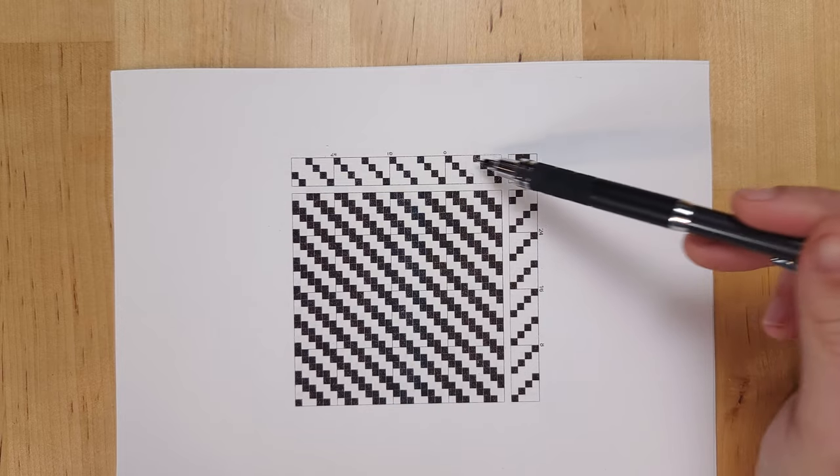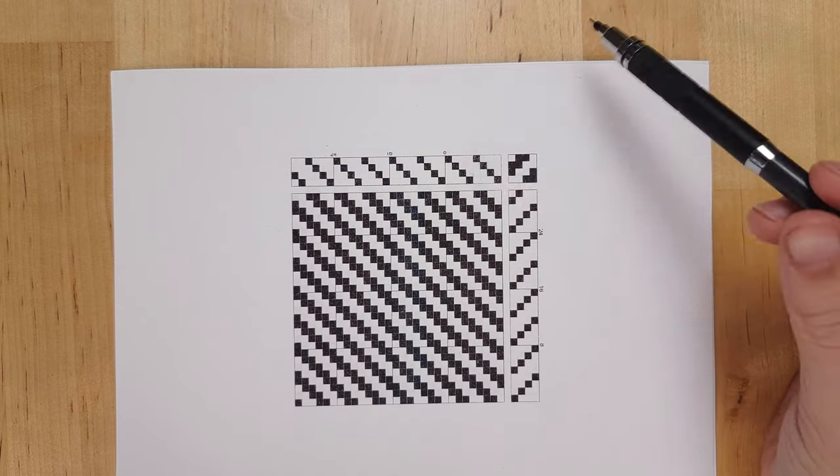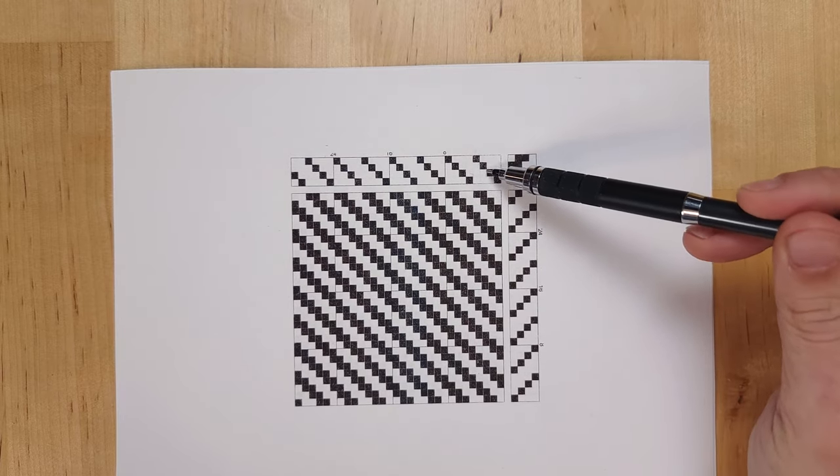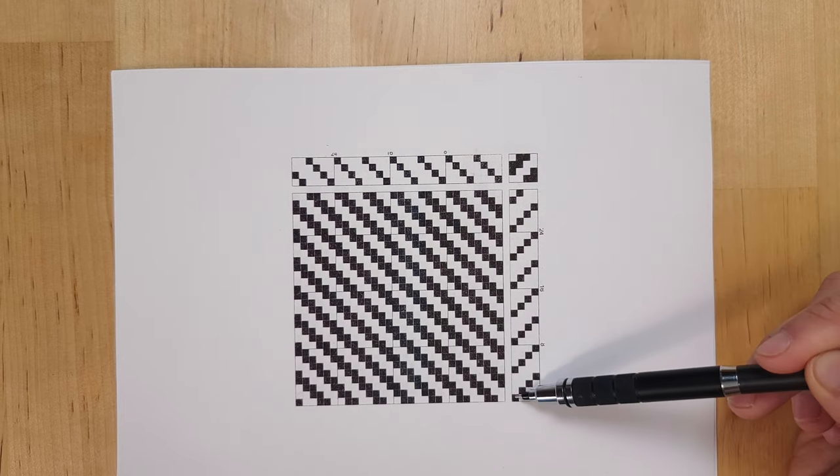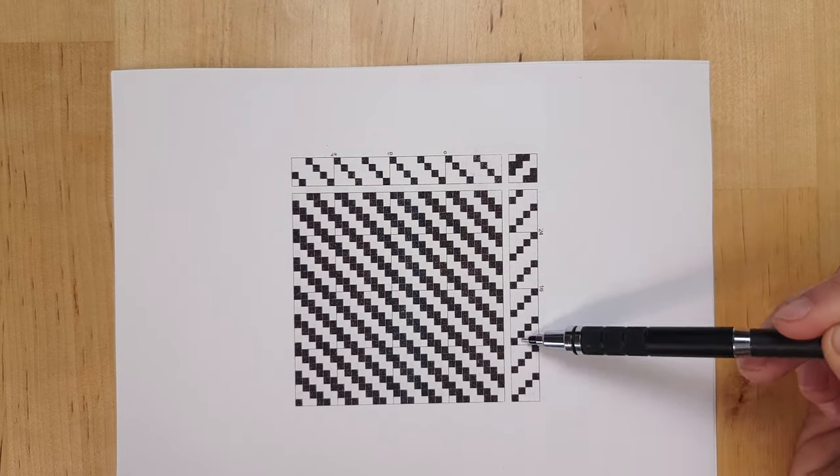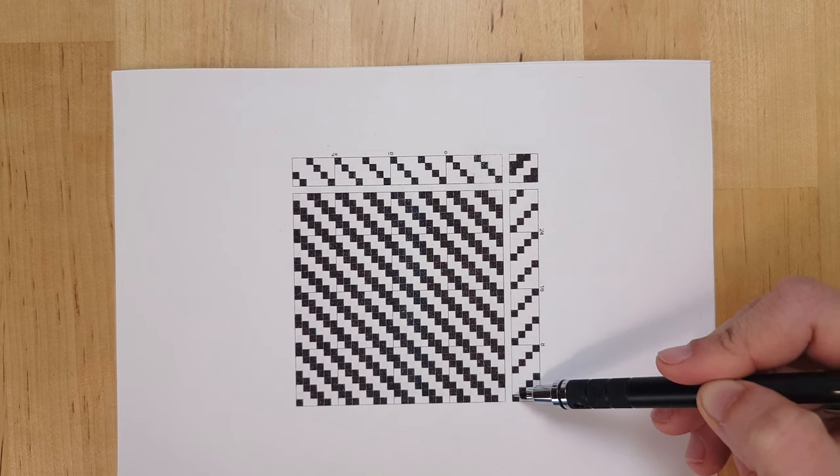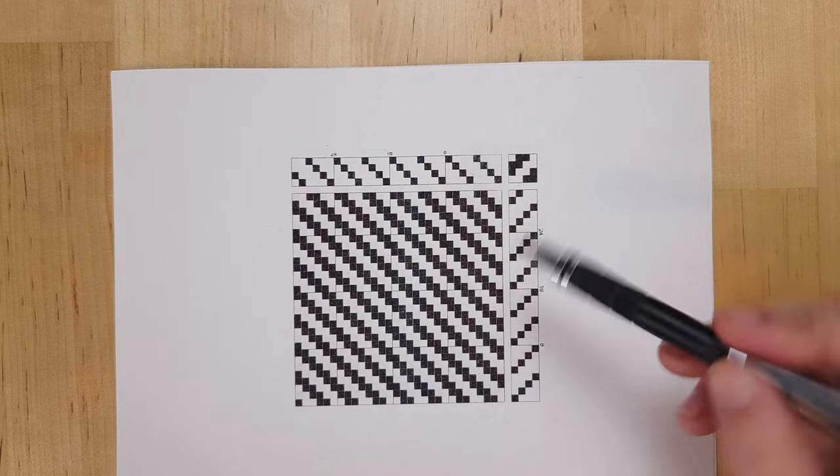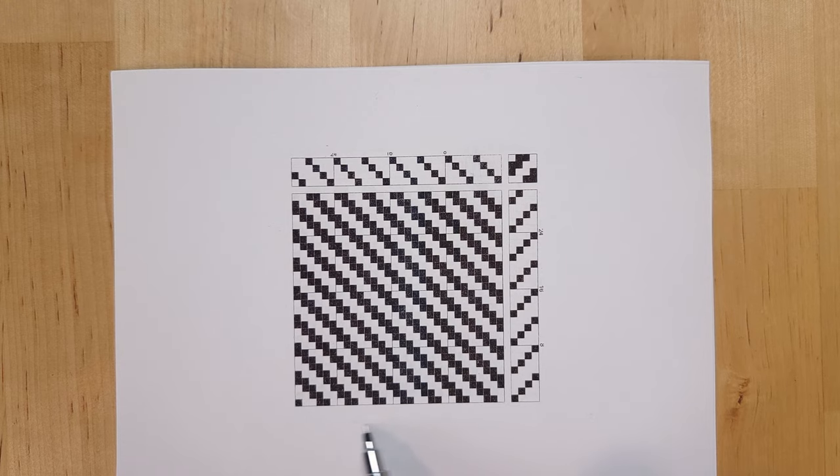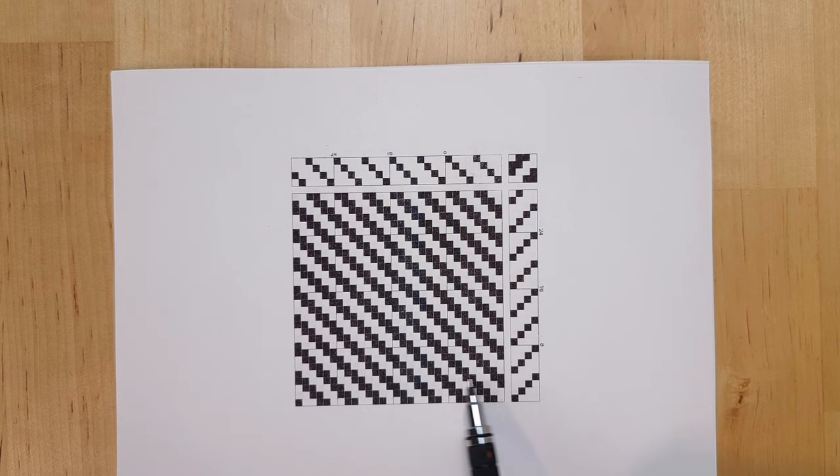The treadling chart is very similar to the threading chart at the top, except that instead of referencing the threads and the warp, it's referring to the treadles underneath your loom. So to read this treadling chart, you'll start here at the bottom left, which seems counterintuitive until you imagine that you're sitting down here at the front of your loom and you're weaving your cloth up line by line, row by row.